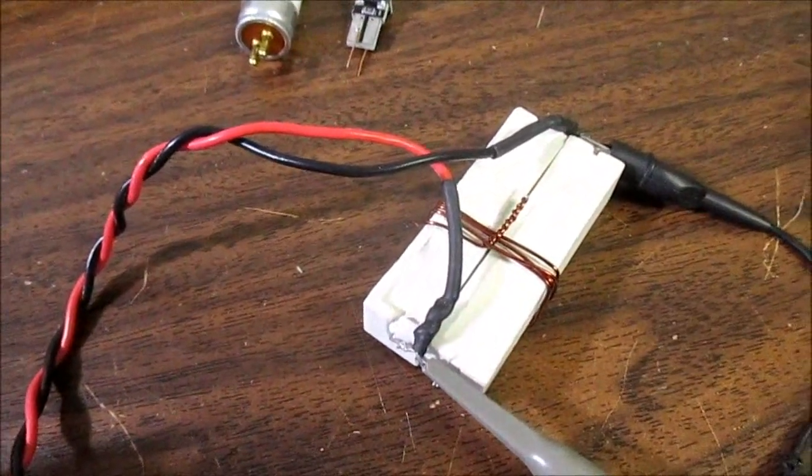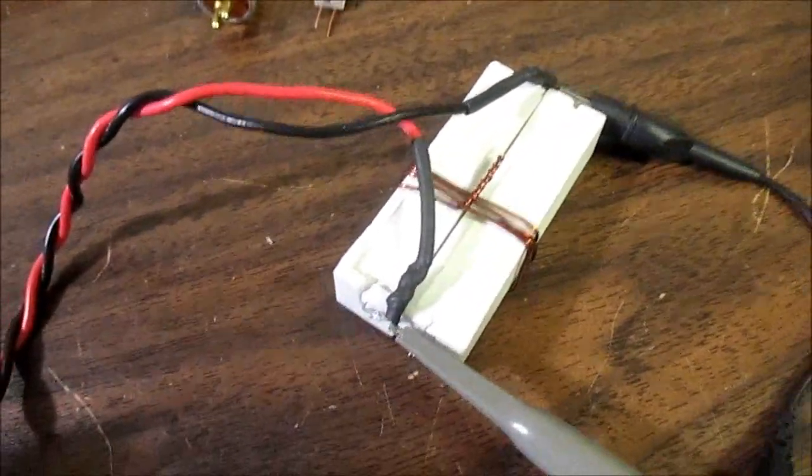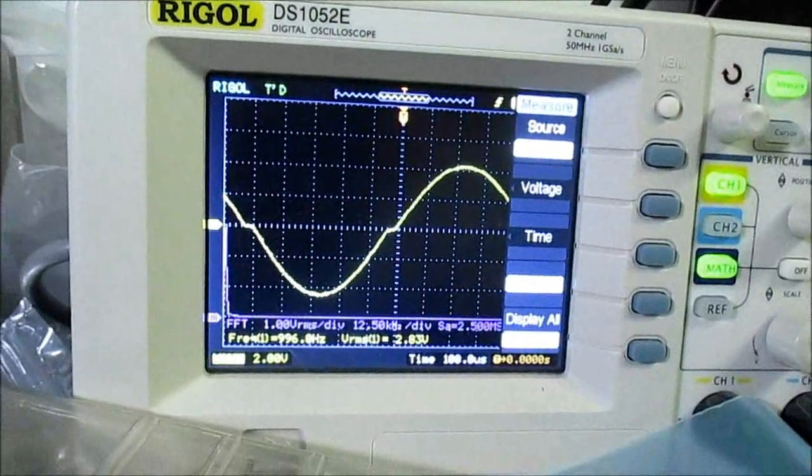Okay, I've hooked up a non-inductive 4 ohm load to the amplifier and I'm scoping it right at the load.